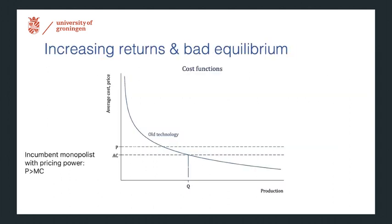So in this example, let's say there's a monopolist with a cost function given by this blue line. So this blue line is decreasing over the full range, which means there are increasing returns to scale. So at higher levels of production, there are lower costs.